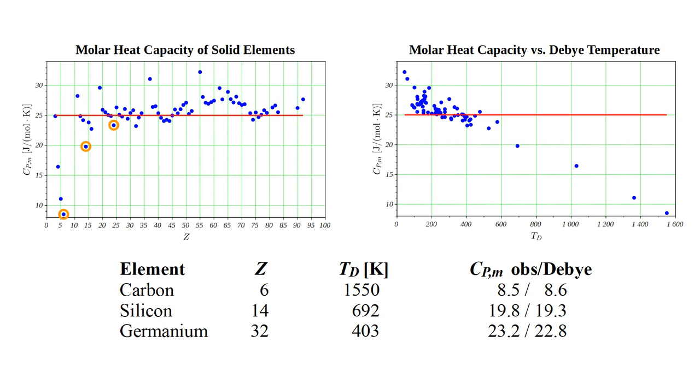Similarly, for silicon with a Debye temperature of 692, observed heat capacity of 19.8, and a Debye model value of 19.3.